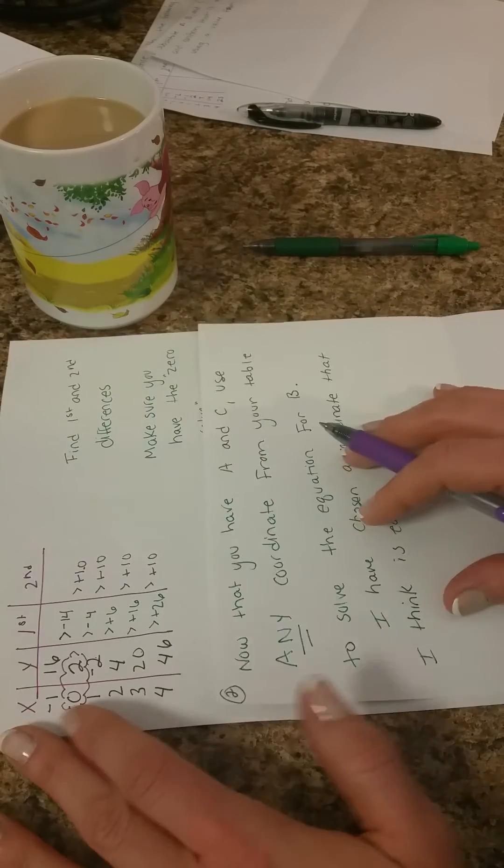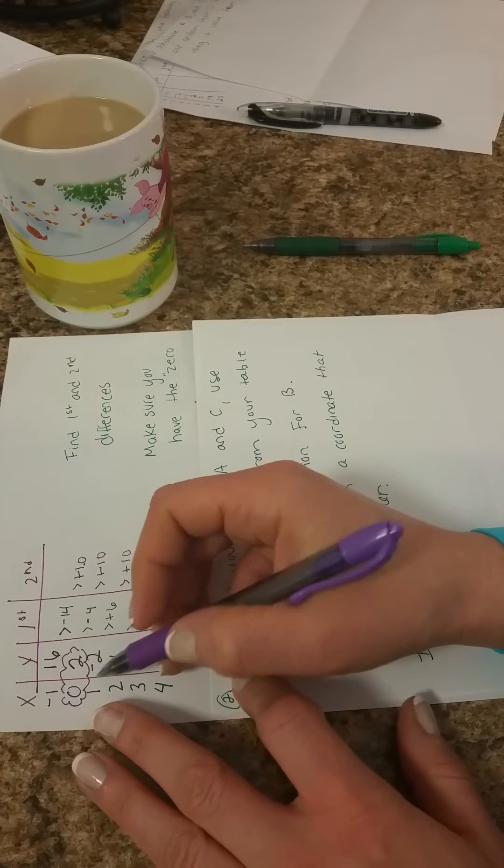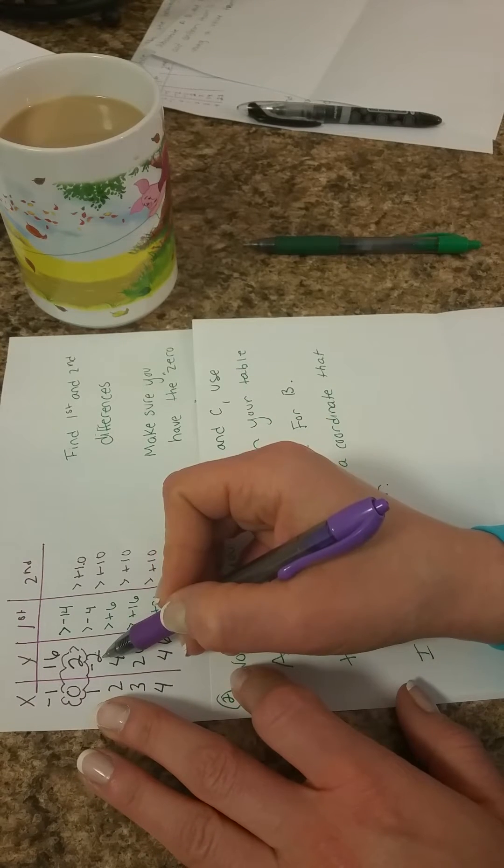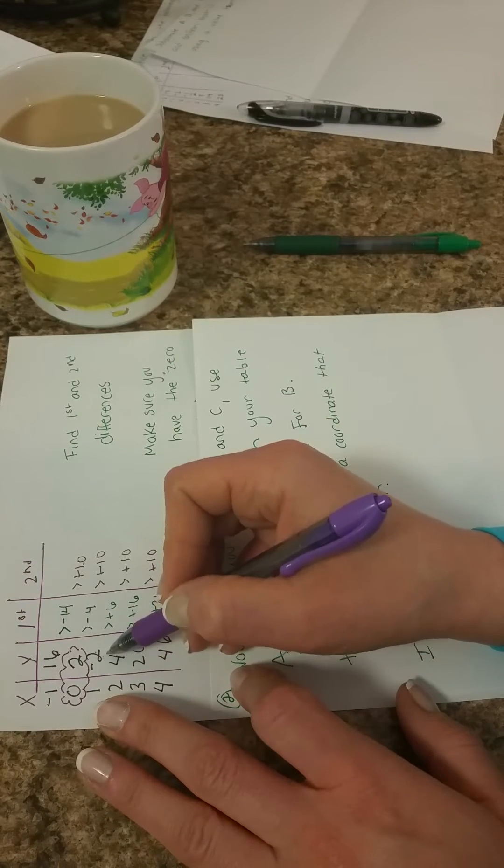So from my original table, some numbers that I think would be easy to work with would probably be either 0, 2 or 1, negative 2. I'm going to use that one.